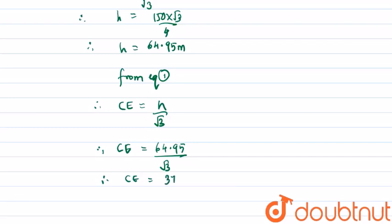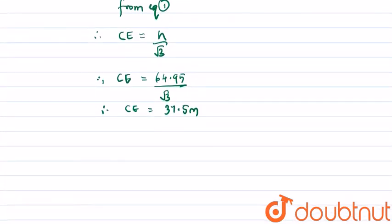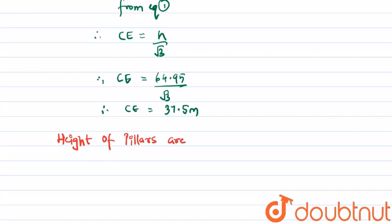Therefore we found that height of pillars are 64.95 meters and distance of point E from a pillar is 37.5 meters.